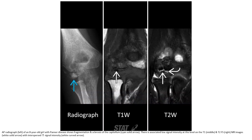AP radiograph on the left of an eight-year-old girl with Panner disease shows fragmentation and sclerosis of the capitellum. There is associated low signal intensity at this level on the T1 and T2 fat-saturated MRI images with inter-articular increased signal intensity.